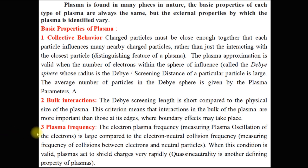The third important property is plasma frequency. Inside the plasma, electrons oscillate due to collision with another electron; this frequency is known as electron plasma frequency. If an electron collides with a neutral atom and oscillations come into existence, its frequency is known as electron neutral frequency. Plasma must have a greater value of electron plasma frequency compared to electron neutral frequency. This feature leads to quasi-neutrality and is another defining property of plasma.